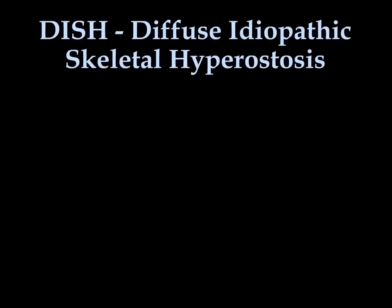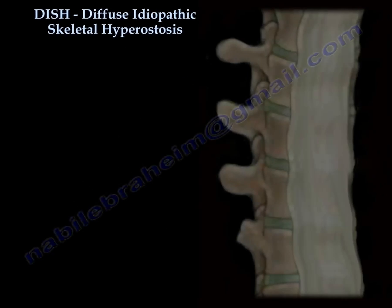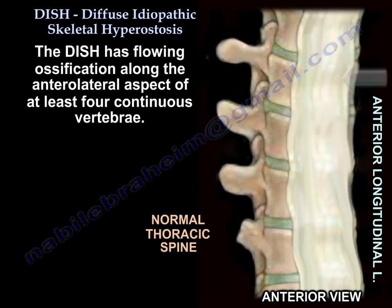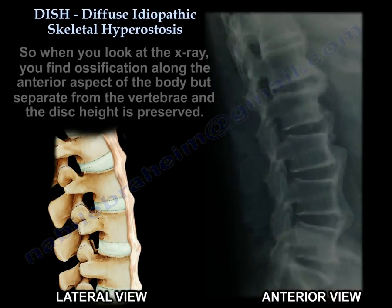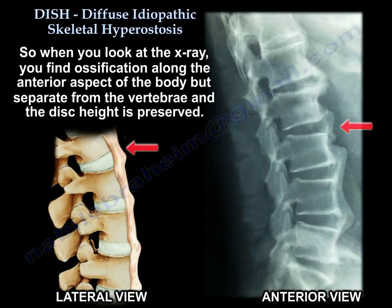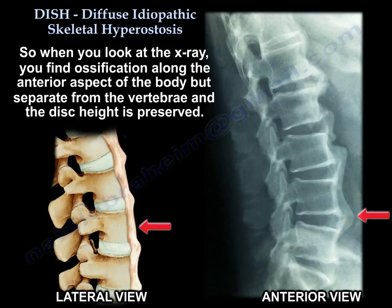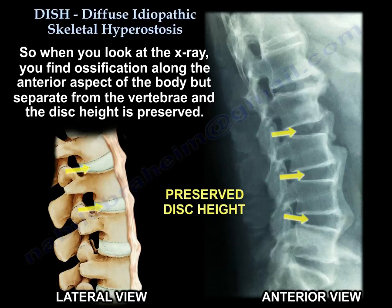DISH — Diffuse Idiopathic Skeletal Hyperostosis. DISH has flowing ossification along the anterolateral aspect of at least four contiguous vertebrae. On X-ray, you find ossification along the anterior aspect of the body but separate from the vertebrae, and the disc height is preserved.